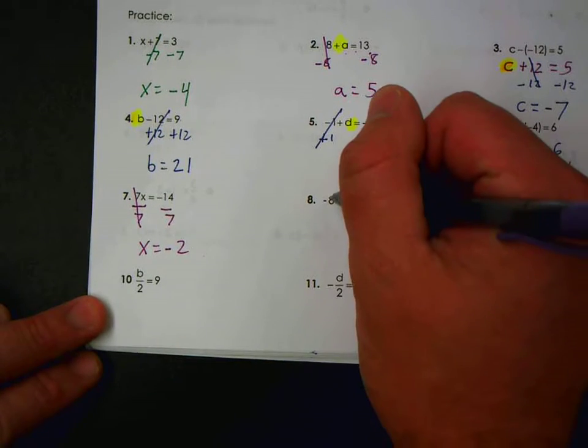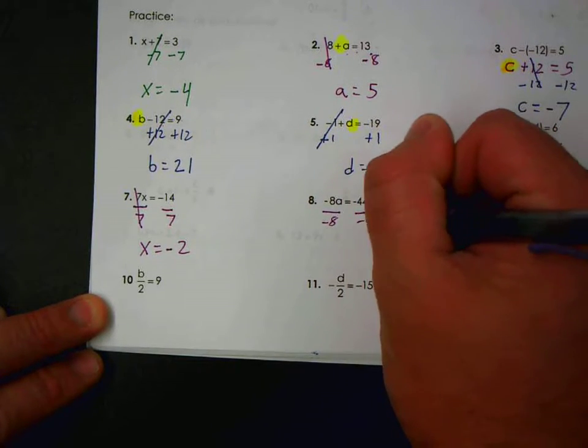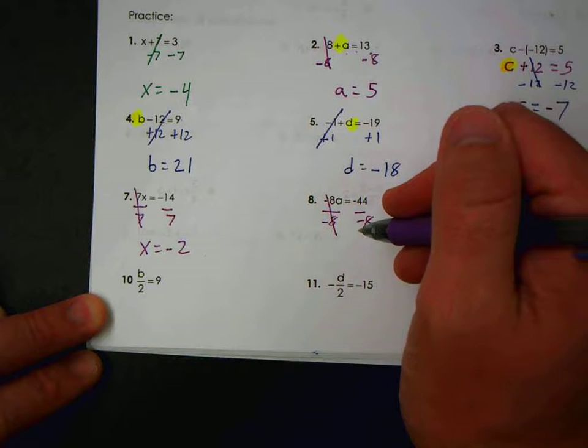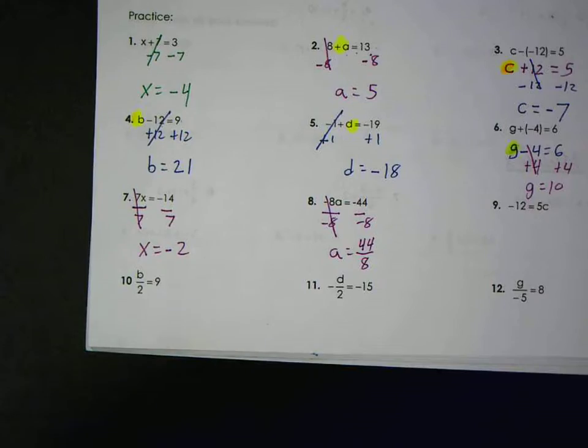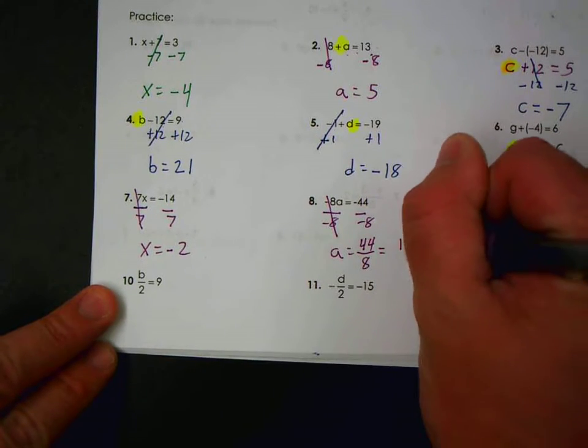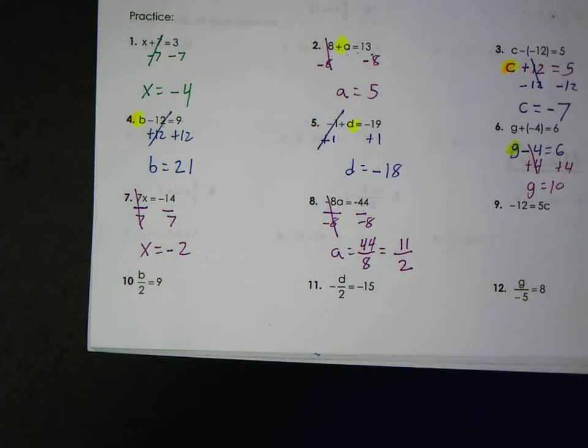Same thing here, negative eight times what? Negative forty-four. We divide by negative eight. I can tell you the negatives will cancel. I get forty-four, and usually fractions reduce. They're both even, I can divide by two. Looks like I can divide by four. So if I divide forty-four by four I get eleven. Eight divided by four I get two. Eleven halves, which is five point five.